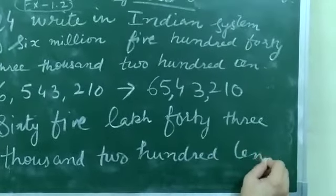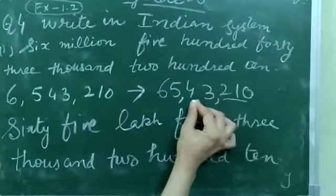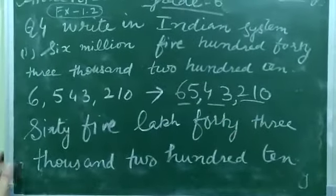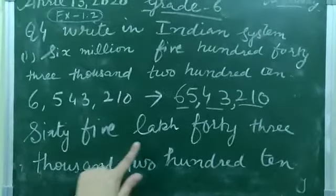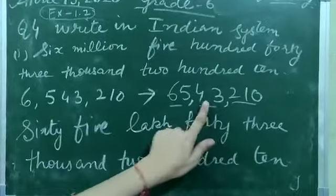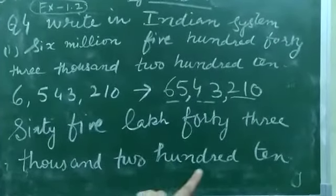I will repeat again. 65 — this is the ones group. This is the thousands group. And this is the lakhs group. 65,43,210.